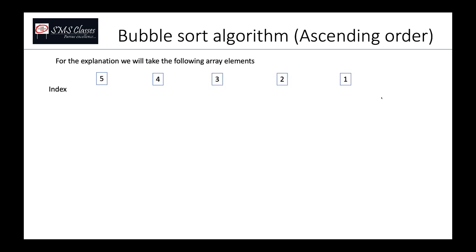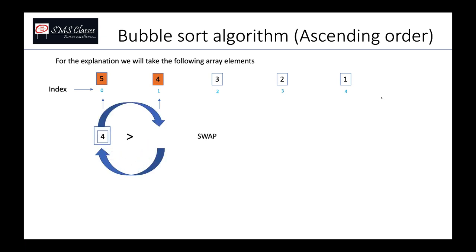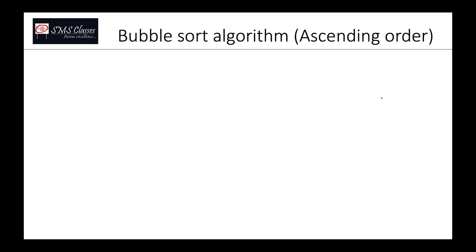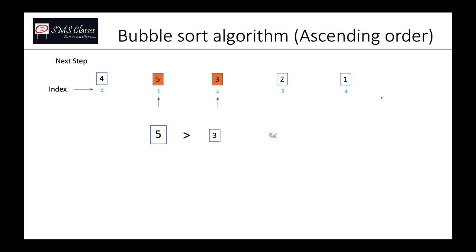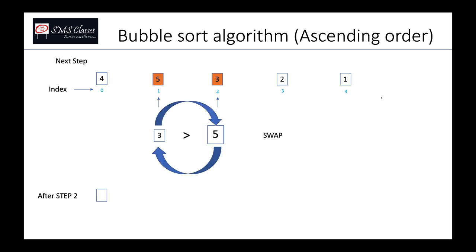Now imagine you have five elements in your array. Bubble sort says we compare the first two elements. Here five is greater than four so we swap — the array becomes [4, 5, 3, 2, 1]. Then we compare the next two elements, five and three. Five is greater than three so we swap — the array becomes [4, 3, 5, 2, 1].